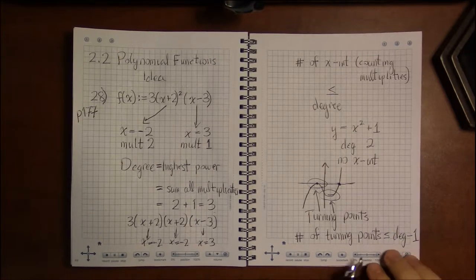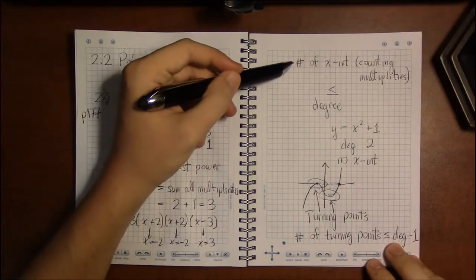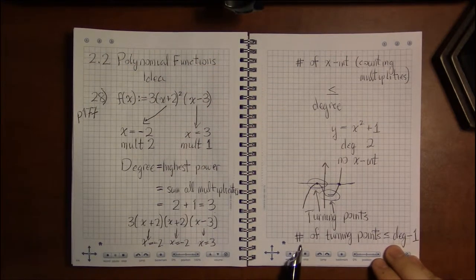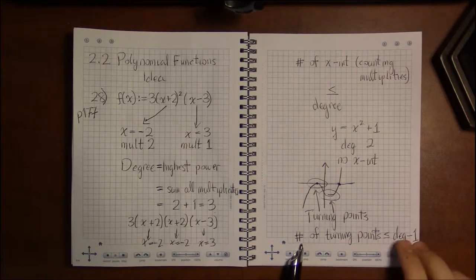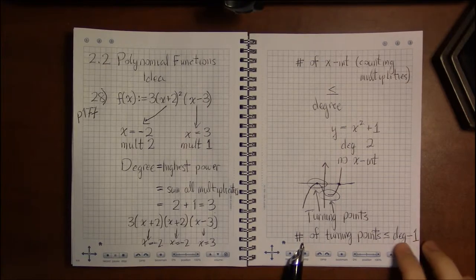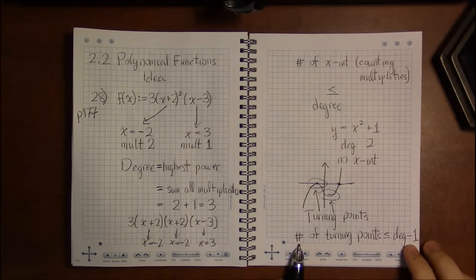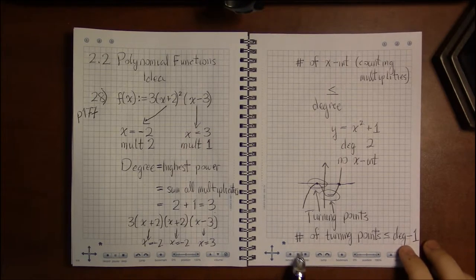And again, we can have examples where actually a polynomial has fewer turning points than the degree minus one. In other words, it doesn't have as many turning points as it could have. Those are possible as well.